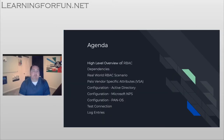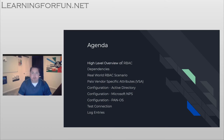Maybe they get access to some areas of the configuration where they're able to see some logs in other areas, but it doesn't need to be universal across the enterprise. So what I'm going to go through today is a high-level overview of what RBAC is, list out the dependencies for the solution, then give you a real-world RBAC scenario followed by what the Palo vendor-specific attributes are and how we're going to use them. Next we'll go through the configuration steps: active directory, Microsoft NPS, and finally the PAN-OS configuration. After that we'll test with three test users and validate via logs.